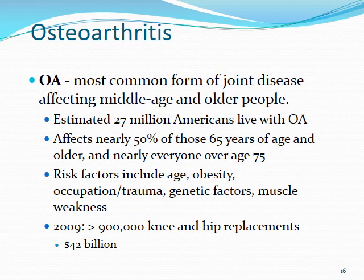Osteoarthritis is a more common form of joint disease with later onset than RA, affecting middle-aged and older patients. An estimated 27 million Americans live with OA, affecting nearly half of those over 65 and practically everyone over 75. Risk factors include age, obesity, occupation with repetitive stress injuries, trauma, sports, and genetic factors. OA drives a large volume of knee and hip replacement surgeries.